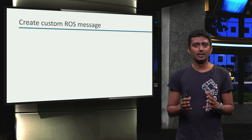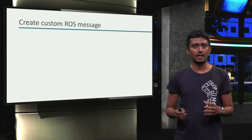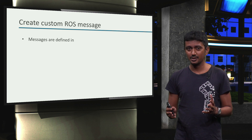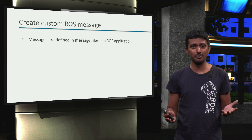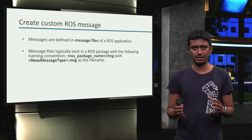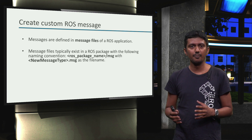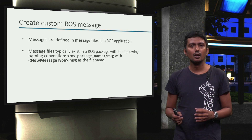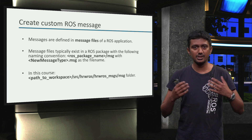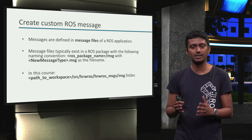Here, we will learn how to create custom ROS message types for our own ROS applications. In ROS, the message types are defined in — surprise surprise — message files. That's very convenient to remember. The message files are defined in the msgs ROS package in the msg folder, with the naming convention new_message_type.msg. For example, in your ROS workspace for this course, you can define new message types in the hrwros_msgs/msg folder.